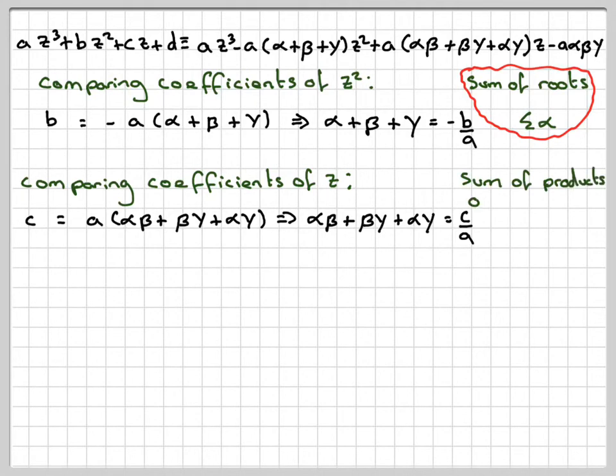This is called the sum of the products of pairs of roots, and for shorthand, that can be written like that.